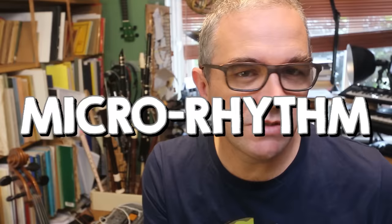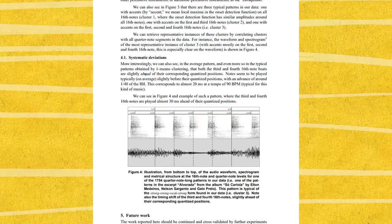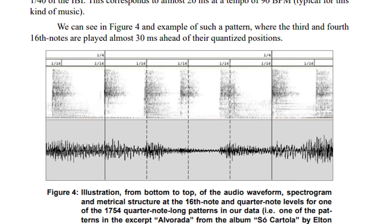This kind of extremely small deviation from a straight pattern has become known as microrhythm. The difference is so small that it's quite challenging to work out what's going on, but musicologist Fabien Guyon studied a large collection of Samba de Roda rhythms, and he found this common feature: they all played the third and fourth beats slightly early.